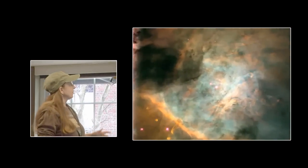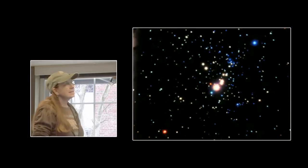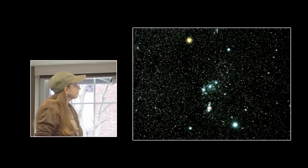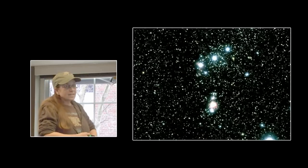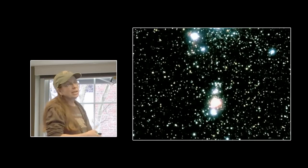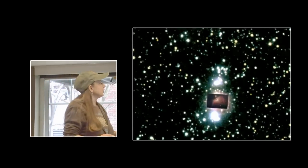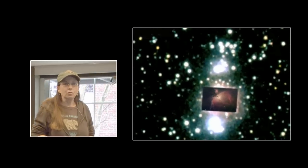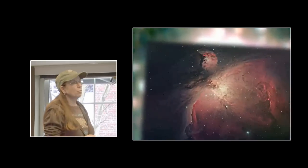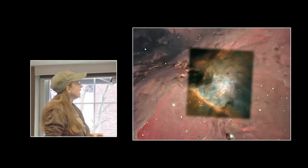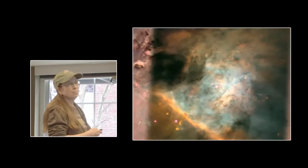This is the Orion Nebula, which is within the constellation of Orion. As you get further and further into the Orion Nebula, you come to the trapezium. These are Hubble images. You get to the trapezium where the massive star formation is taking place. A lot of star formation is taking place in the trapezium.